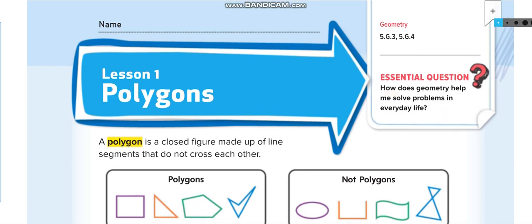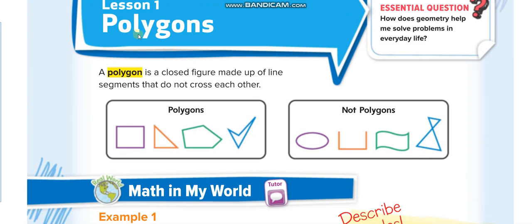Let us start today's lesson: polygons. The word polygon means many sides — 'poly' means many and 'gon' means side. A polygon is a closed figure. The first rule: it must be closed. It must be made up of line segments — straight lines, not circular lines, not arcs, not curvy lines — and the sides do not cross each other.